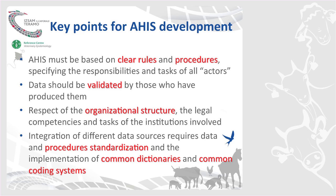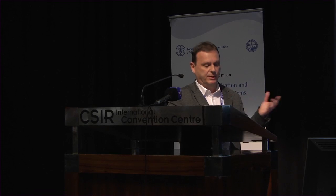Basic key points: an animal health information system must be based on clear rules and procedures. Another important point is that data should be validated by the same persons that generate them — that's very important. It must also respect and be based on the organizational structure of the veterinary services in which it is placed. When integrating different systems, big efforts should be made on the standardization of procedures and having common dictionaries and a common coding system between the different systems.